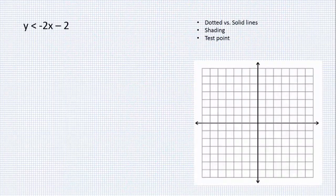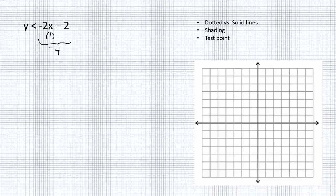Graphing linear inequalities. Here's a linear inequality in slope-intercept form. Let's see how it's different than an equation. Think about this — if I plug in a number for x, like let's say 1. If x was 1, I would do 1 times negative 2 is negative 2, minus another 2 makes negative 4. If I was graphing an equation, I would now have a point at (1, -4), and that's the only point I would have found. But if this is an inequality, y is all the numbers less than negative 4 for the x-coordinate 1. So if you go over to 1 on the graph,